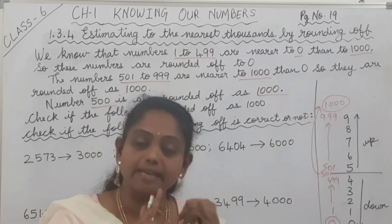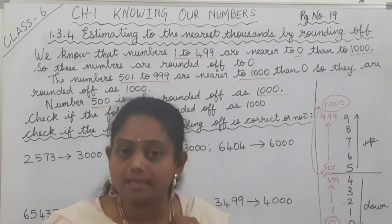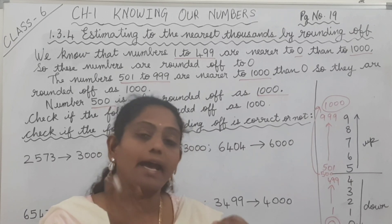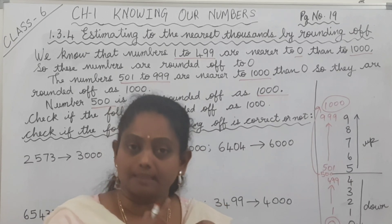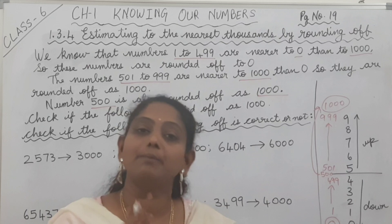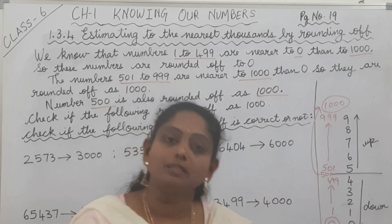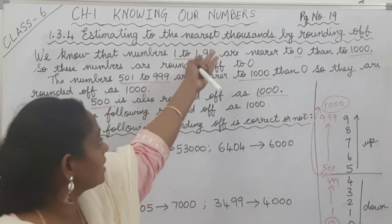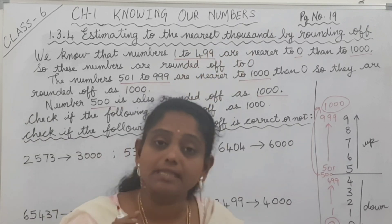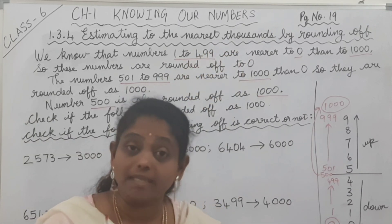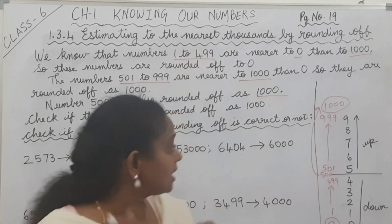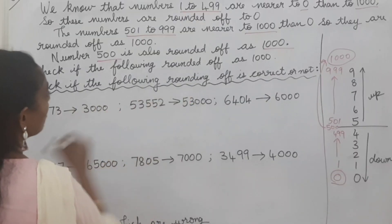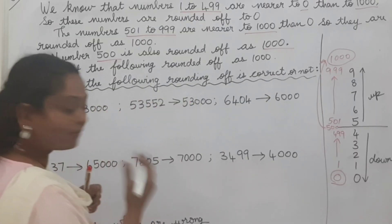To recap: rounding off to nearest tens, we look at the ones place. Rounding off to nearest hundreds, we look at the tens place. And rounding off to nearest thousands, we look at the hundreds place value.